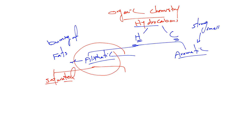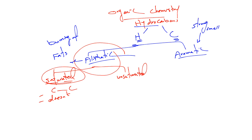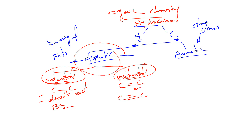The aliphatic compounds can be divided into two categories: saturated compounds and unsaturated compounds. Saturated compounds have only single bonds, so they do not react with bromine water. Unsaturated compounds have double or triple bonds, which allows them to react with bromine.